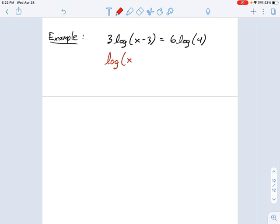Log of x minus 3 equals 6 over 3, that's going to be 2, times 2 log of 4. And I still want to get logarithms by themselves if I can on both sides.